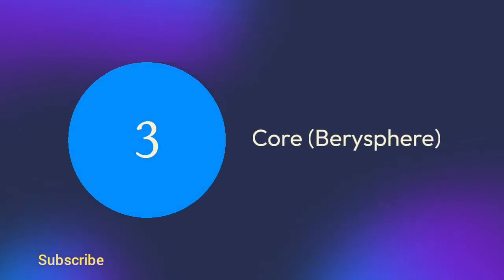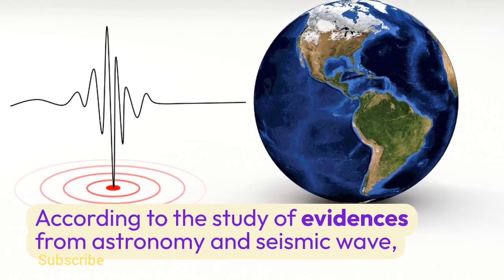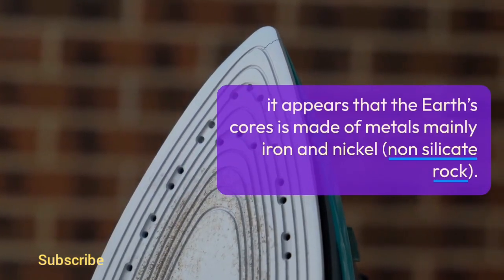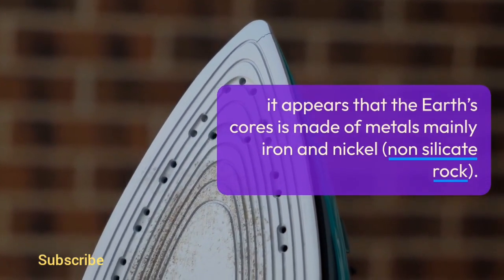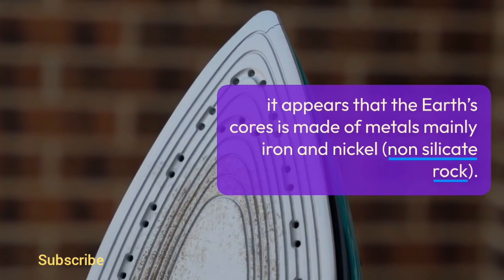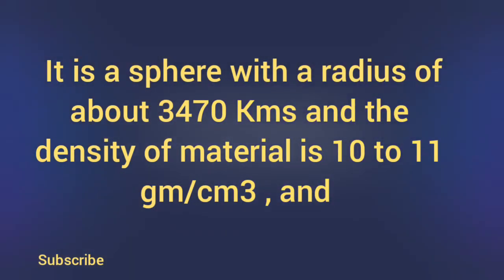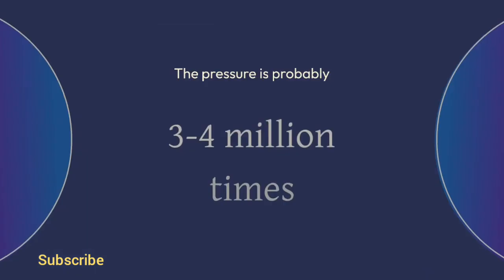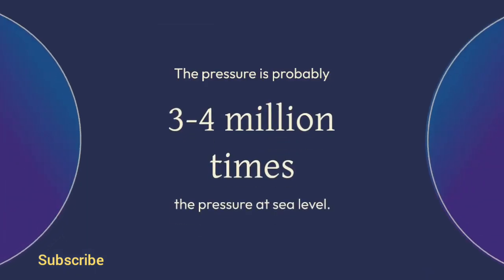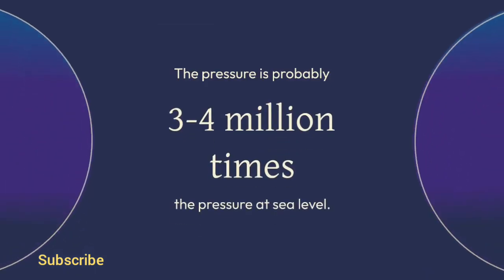3. Core (Barosphere). According to evidence from astronomy and seismic waves, it appears that the Earth's core is made of metals, mainly iron and nickel — non-silicate rock. It is a sphere with a radius of about 3,470 km, a density of 10 to 11 g/cm³, and pressure probably 3 to 4 million times the pressure at sea level. The core is made up of two sublayers: the outer core and the inner core.